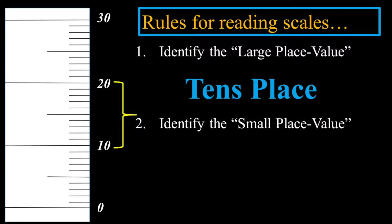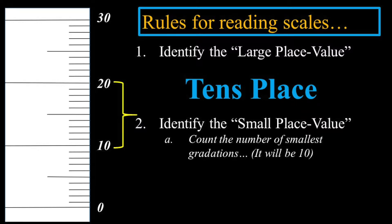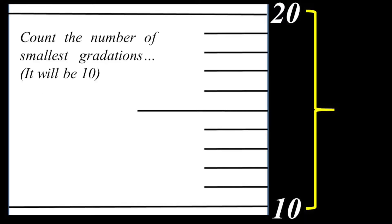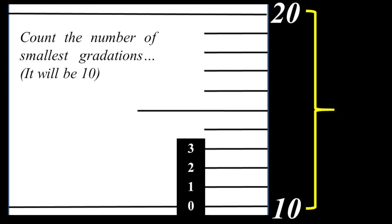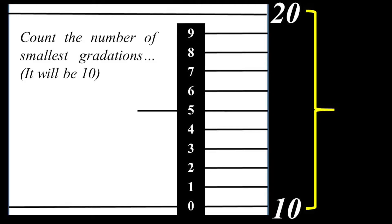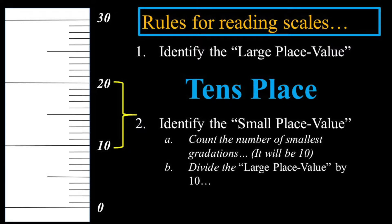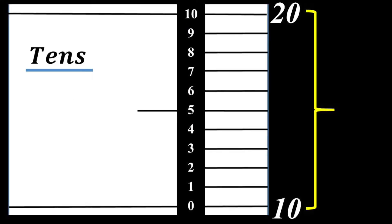Identify the small place value — count the number of smallest graduations. It will equal 10. So you're simply going to count them. 10's is the large place value, and then count the number of smallest graduations — it will be 10. You count from 0 through 10, and you get 10 graduations. Then you divide the larger place value by the number of graduations: 10's divided by 10 gives 1's place. That's the next place value — the small graduation is 1's place.